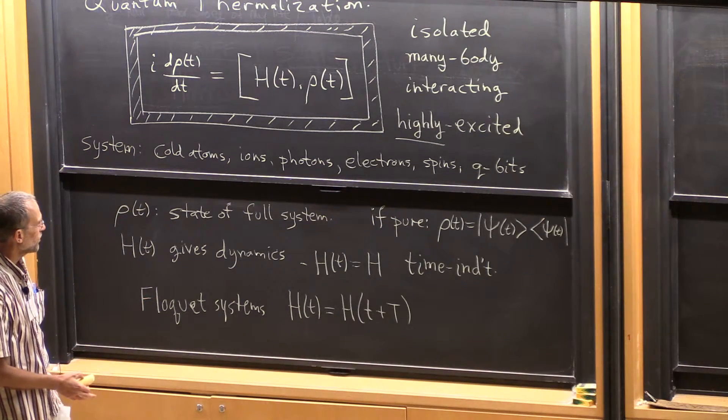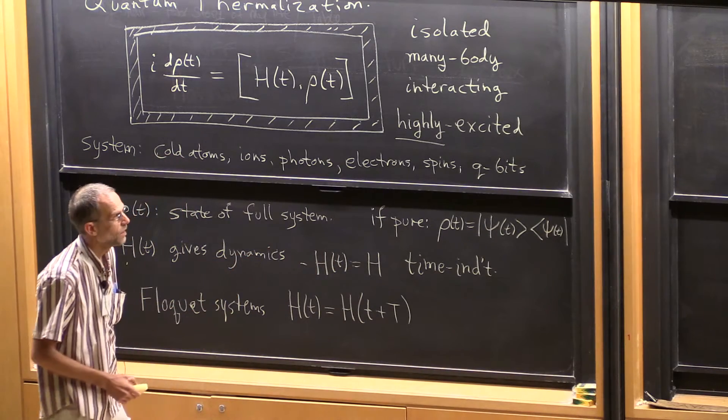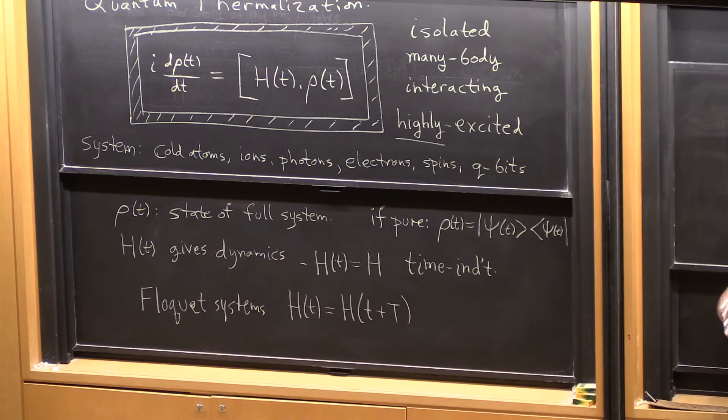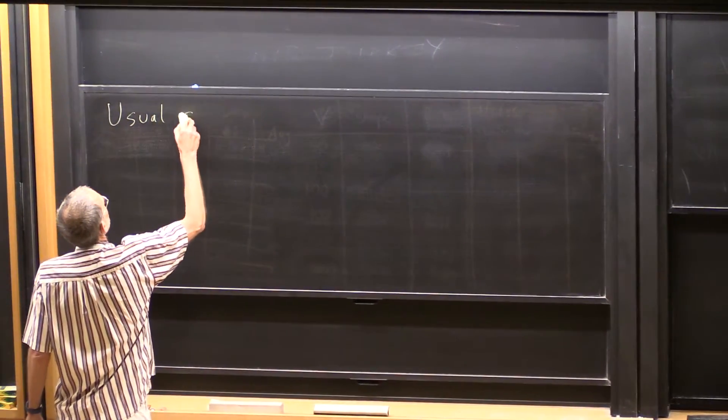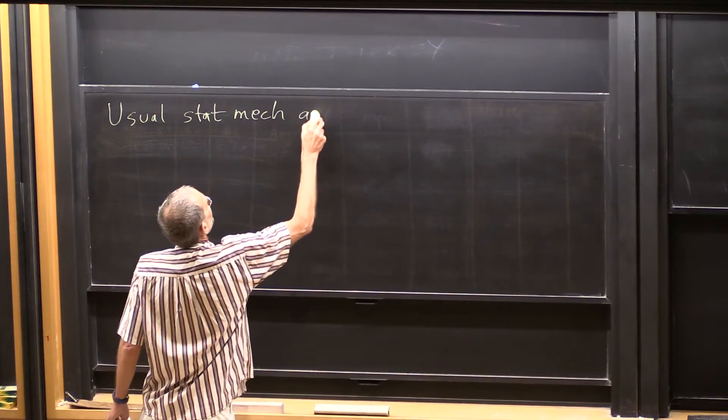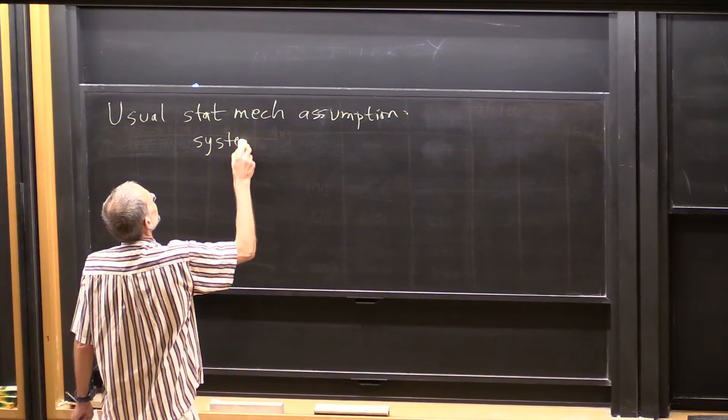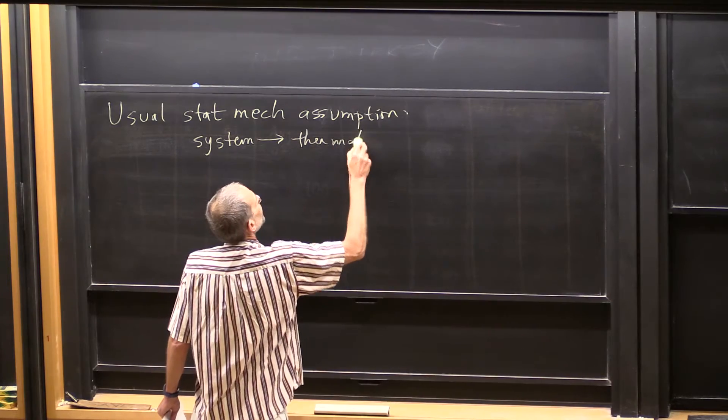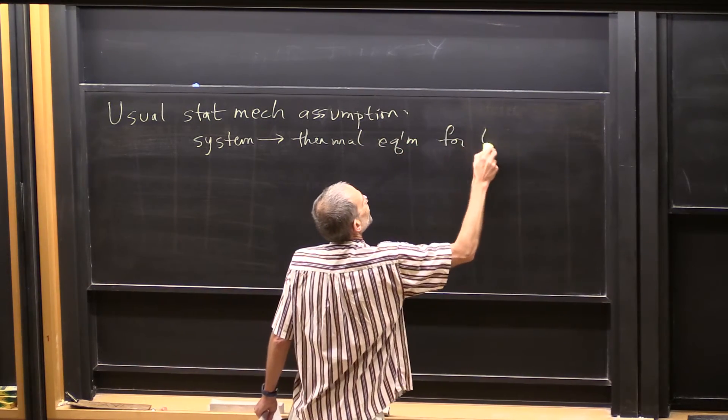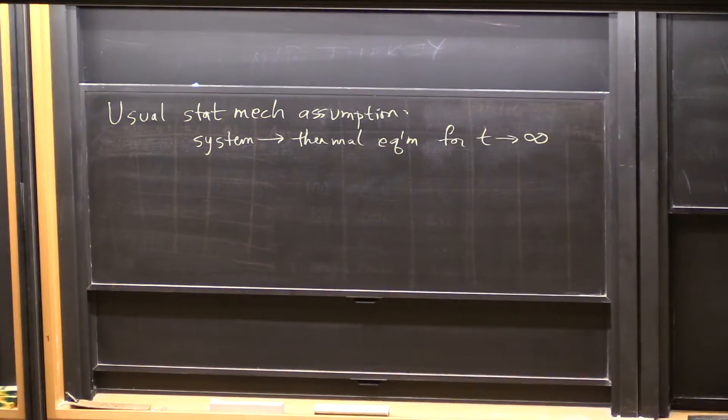So when we have a system like this, in particular this time-independent one is what is usually discussed in statistical mechanics. The usual statistical mechanics assumption is the system goes to thermal equilibrium for long time. If we set up a system like this with many degrees of freedom and wait, it goes to equilibrium. And if that's true, then we can just use equilibrium statistical mechanics to figure out what its behavior is at long time. We don't have to solve the dynamics. That's an enormous simplification, and that's the power of statistical mechanics.